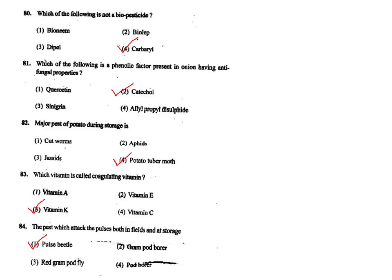Q83. Which vitamin is called the coagulating vitamin? This is Vitamin K, because it helps blood clotting.